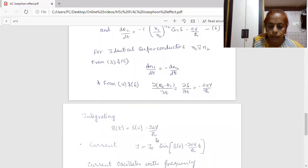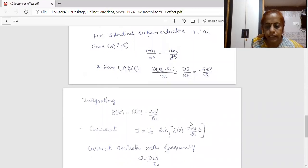So, the current will be j = j₀ sin(δ₀ - 2eV/ℏ t). Here, we can see that the current oscillates with frequency ω, which is equal to 2eV/ℏ. That means in the output, we have a current which is oscillating. That means this current is alternating current. This effect is known as AC Josephson effect.